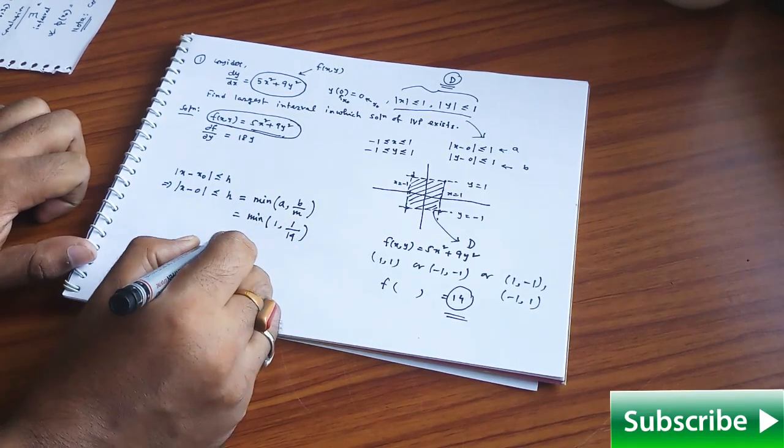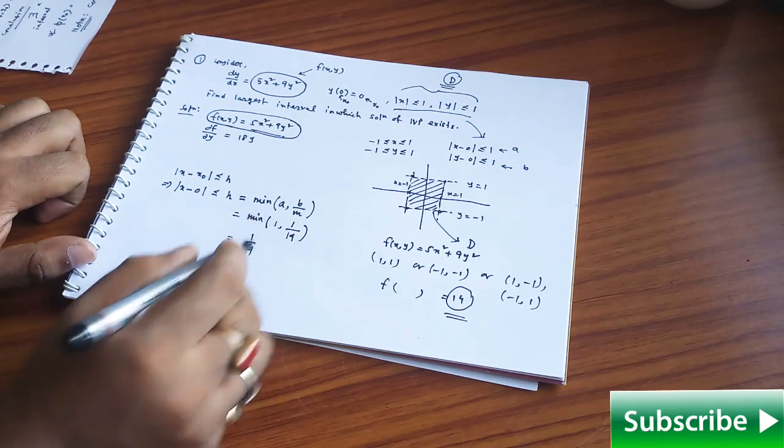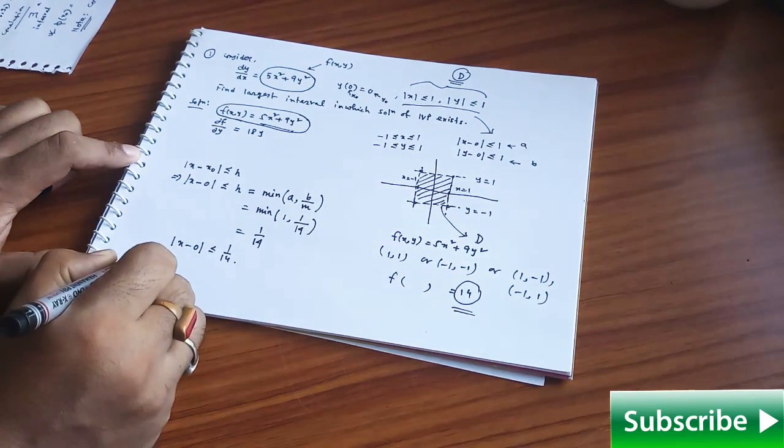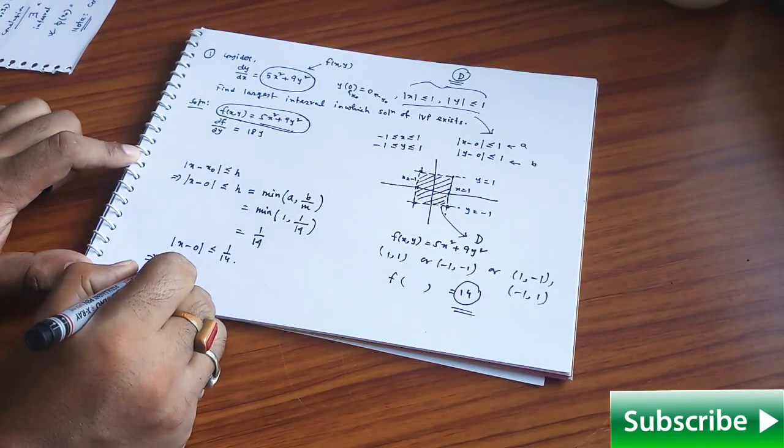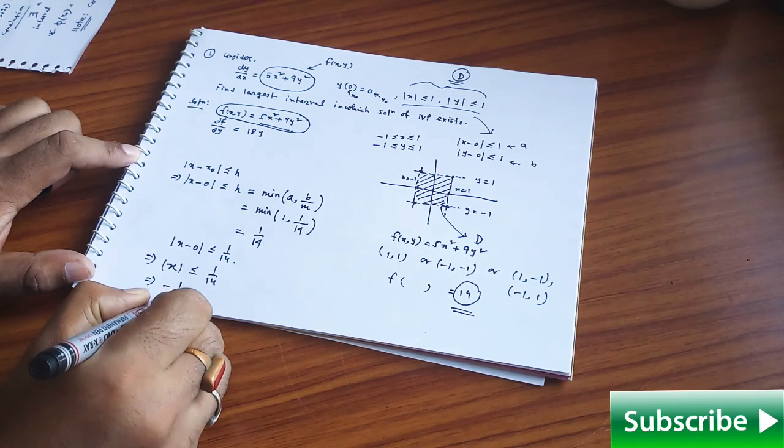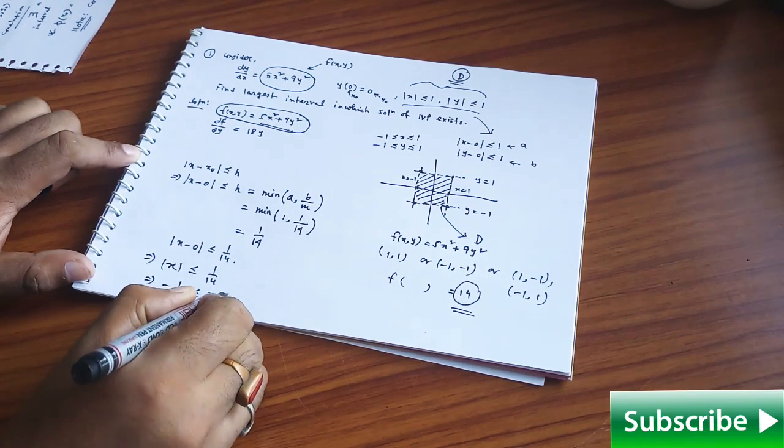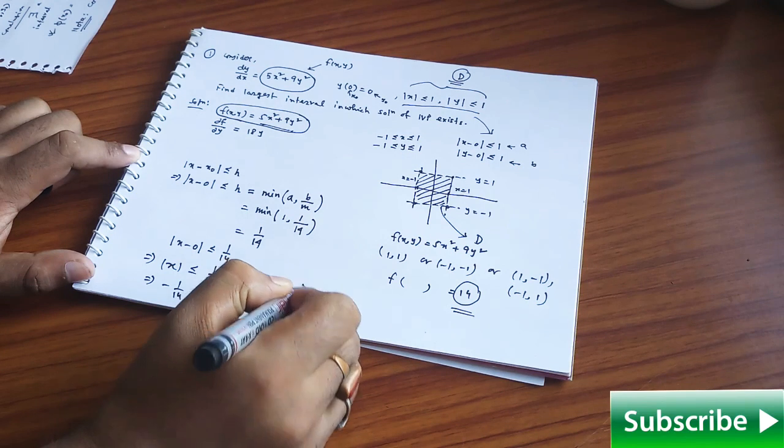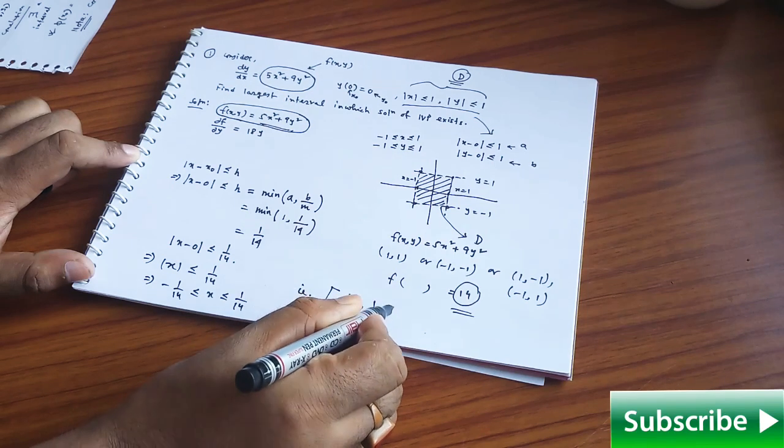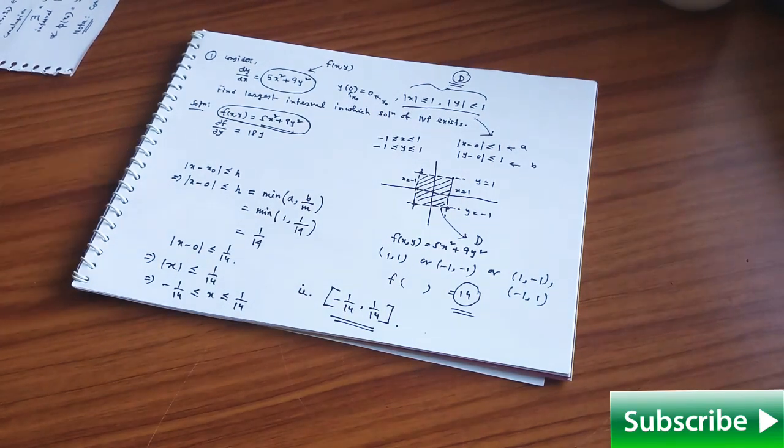Minimum of 1 comma 1 by 14 it is 1 by 14. You have |x - 0| ≤ 1/14 that implies your |x| ≤ 1/14 and that is the required interval it is -1/14 to 1/14. This is the you can say largest interval in which the solution of the initial value problem will exist.